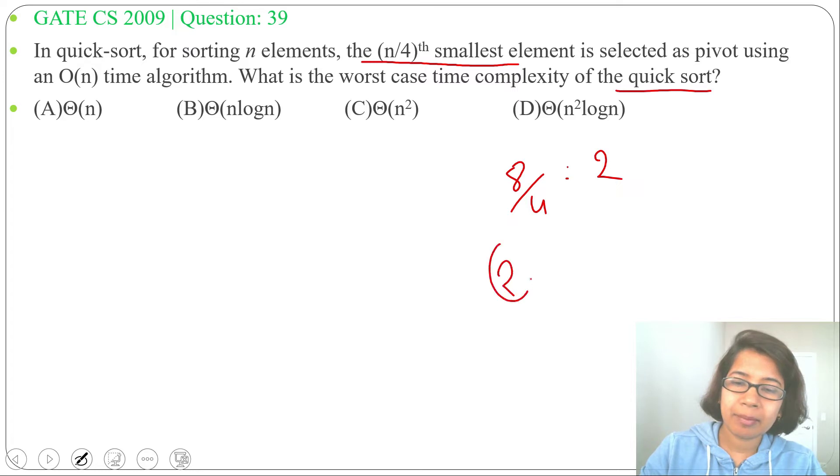Then that second element will be the pivot and it will be already sorted. Before it there will be one element and after it there will be 6 elements. So one side contains one element and the other side contains 6 elements.